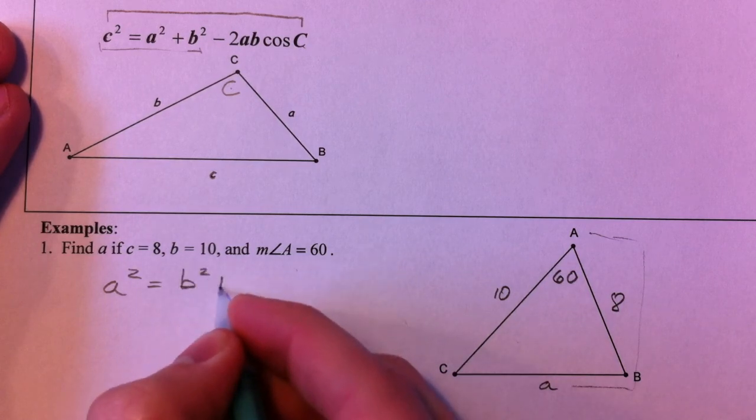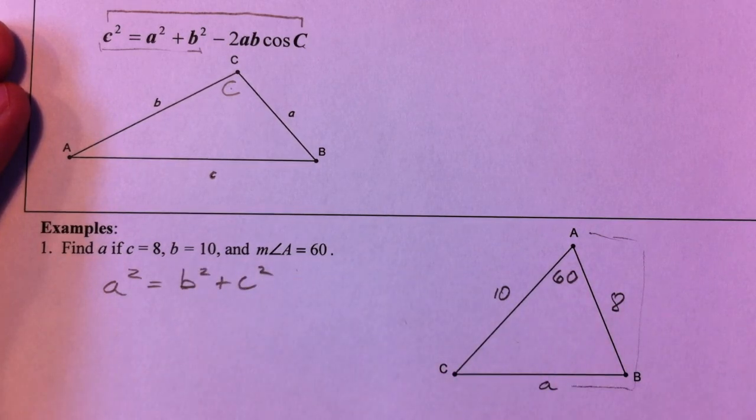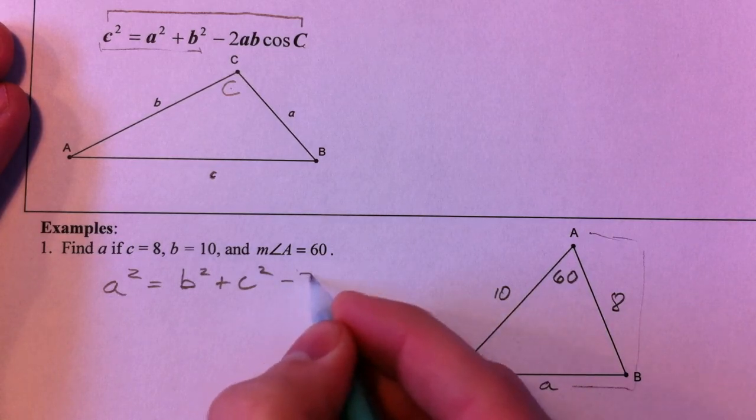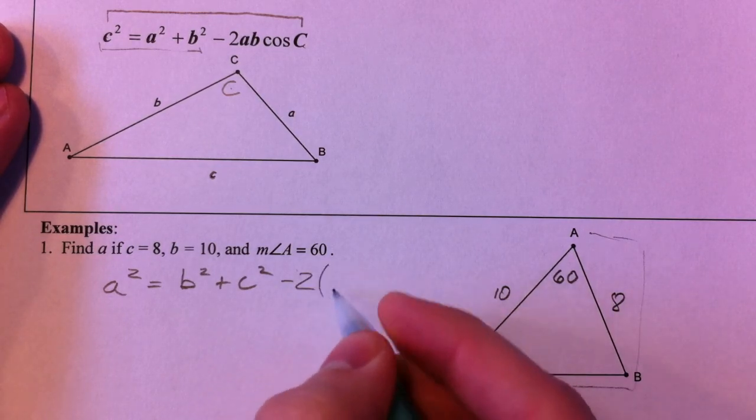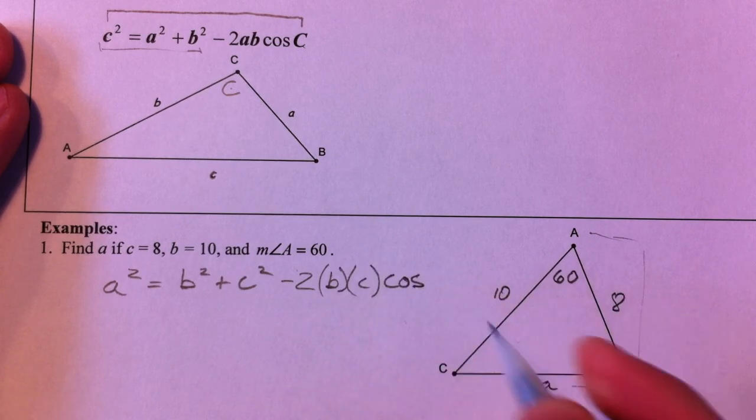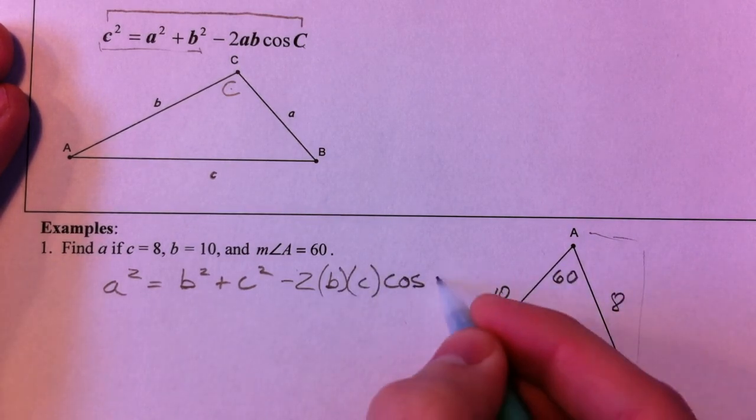b² plus c², doesn't matter what order they're in because we're adding them, minus 2 times b times c times the cosine of A.